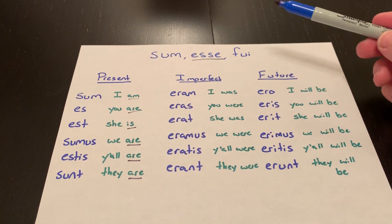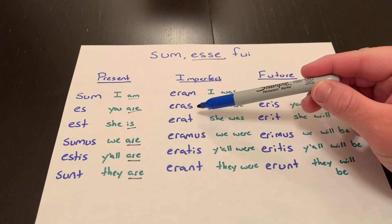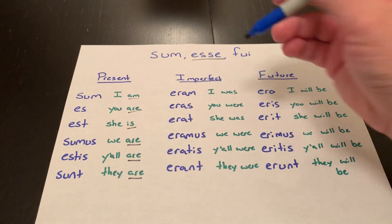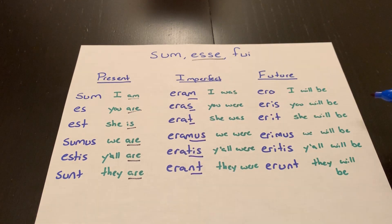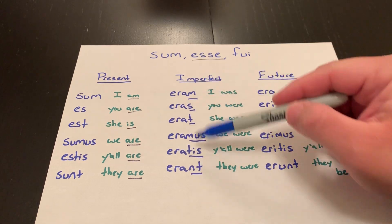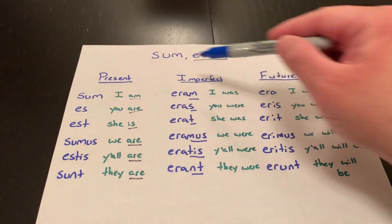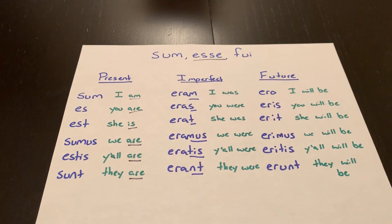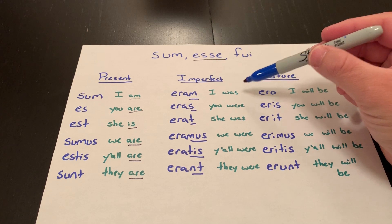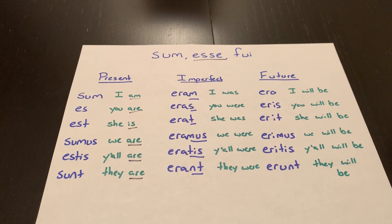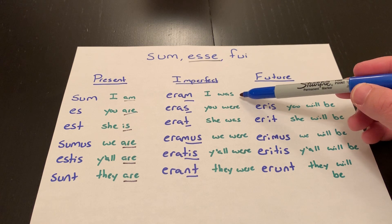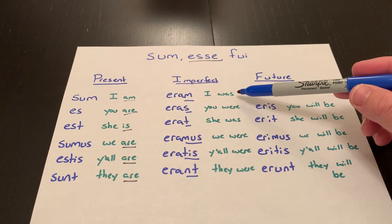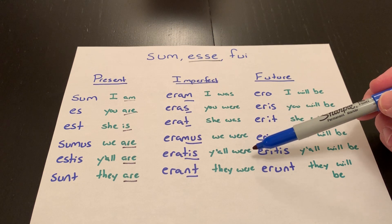The imperfect forms, which again just need to be memorized, are: ERAM, ERAS, ERAT, ERAMUS, ERATIS, ERANT. You can see it's not completely irregular — we still have our usual M, S, T, MUS, TIS, NT personal endings. But there's no BA, and this ERA didn't come from anywhere in the present stem. The translation: we often do the imperfect as 'was/were verbing,' like AMBULABAM — 'I was walking.' But with the verb 'to be,' that's awkward. Instead, you can just use the simple past: I was, you were, she was, we were, y'all were, they were.